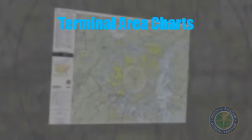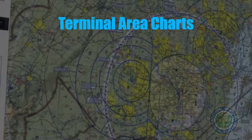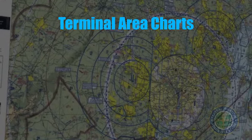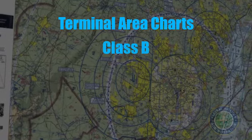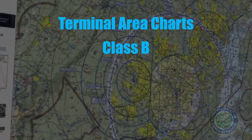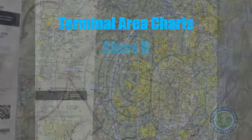Terminal area charts provide a zoomed-in depiction of select cities. They're usually centered on Class B airspace and provide more detail than a sectional chart.